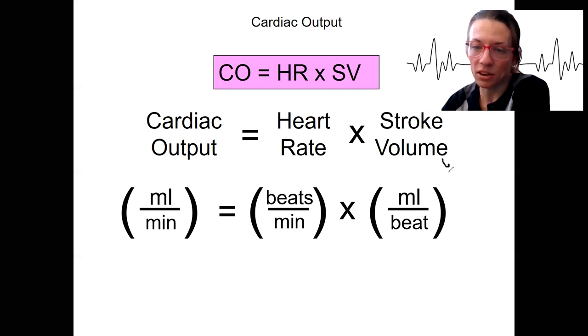Remember, stroke volume is end diastolic volume minus end systolic volume. These beats cancel out to give us milliliters per minute.